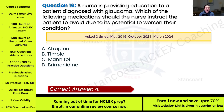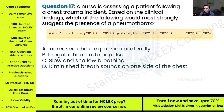Question seventeen: A nurse is assessing a patient following a chest trauma incident. Based on the clinical findings, which would most strongly suggest the presence of a pneumothorax? This has been asked seven times. Options: A) increased chest expansion bilaterally; B) irregular heart rate or pulse; C) slow and shallow breathing; D) diminished breath sounds on one side of the chest.